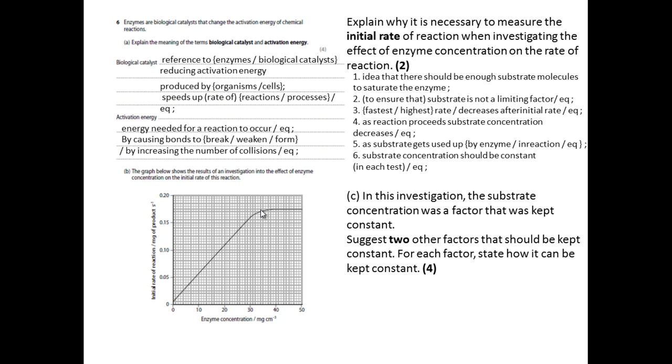The idea that there should be enough substrate molecules to saturate the enzyme and so in that respect, it is the substrate that is not a limiting factor. The reason why you measure it at the start is there are lots of substrate molecules there and therefore that is not having a limit on the rate. So explaining that point would get you two marks.